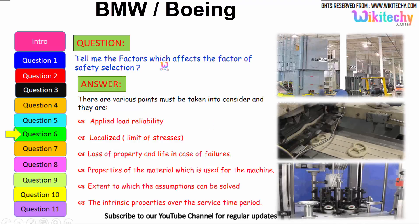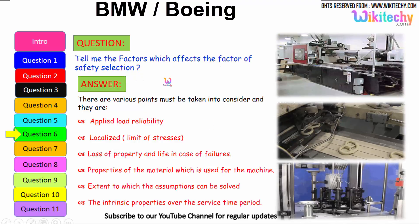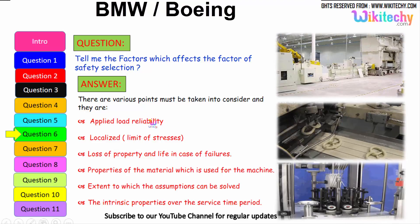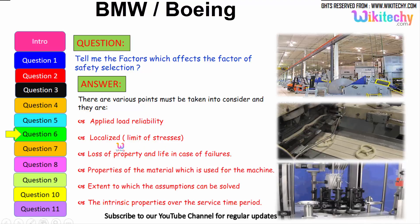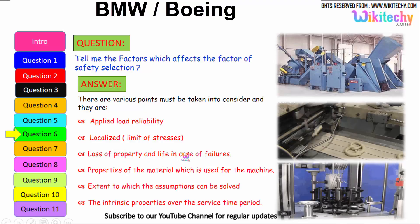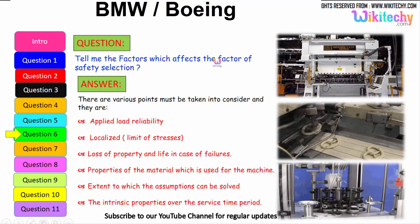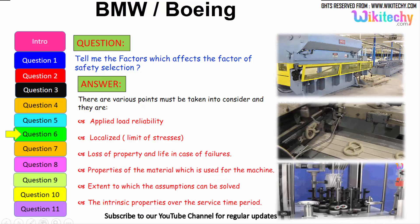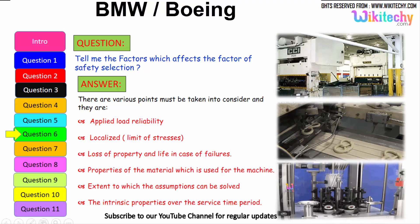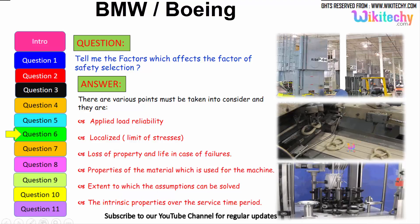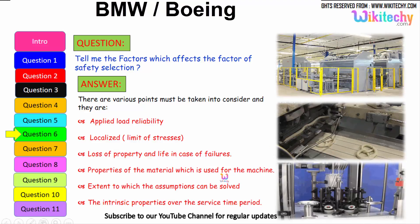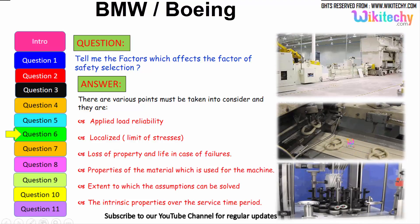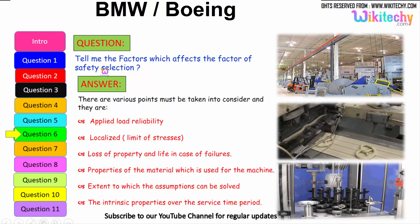The factors which affect the factor of safety selection include: applied load reliability; limit of stresses thus localized; loss of property and life in case of failure; properties of the material used for the machine; the extent to which assumptions can be resolved — how much it will extend, compress, etc.; and the intrinsic property over the service time period — how long it will sustain. All these need to be considered for factor of safety selection.